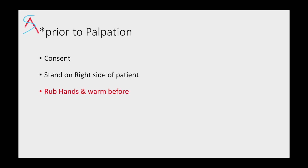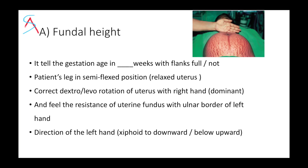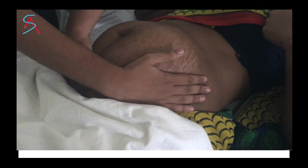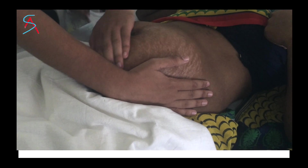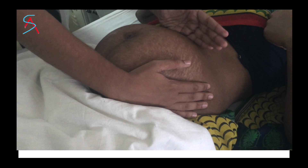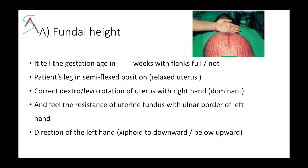Moving on to palpation. Before palpation, make sure you rub your hands and warm them — the patient should not feel uncomfortable with cold hands. First, measure the fundal height, which tells the gestational age in weeks. Also mention whether flanks are full or not. The patient's legs should be in a semi-flexed position. With your right hand, correct the dextro or levo rotation of the uterus. With the ulnar border of your left hand, feel the resistance of the uterine fundus, moving from upward to downward or vice versa. At 24 weeks, fundal resistance is felt at the level of the umbilicus, and at the level of the xiphoid by 36 weeks.